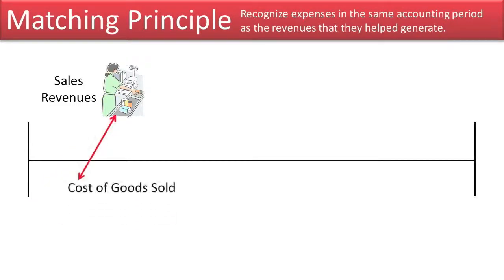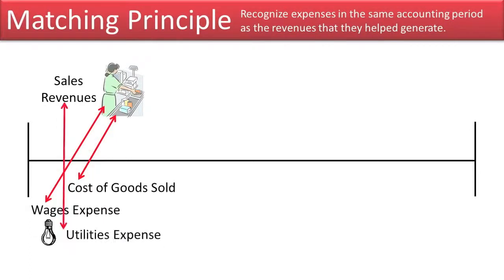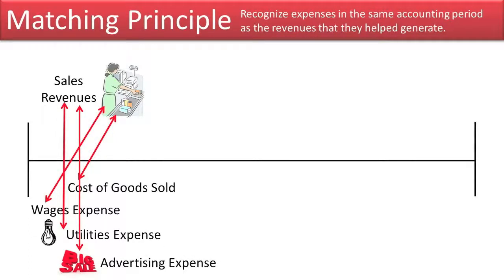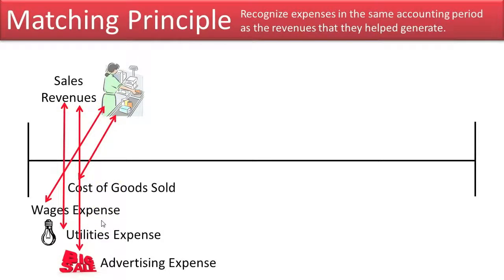For example, the cost of goods sold, the wages expense, the utilities expense, and the advertising expense. All of these are costs that we incurred that helped us to generate these revenues. Since we've received the benefit of these costs, we need to expense them so that the revenues and expenses are in the same accounting period.